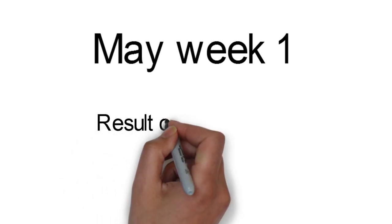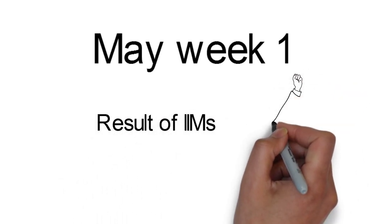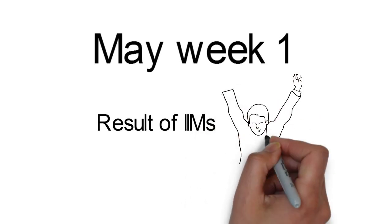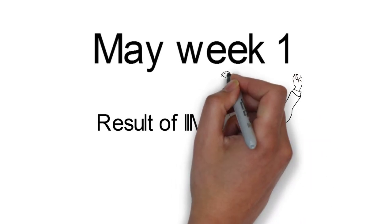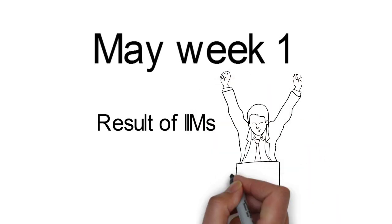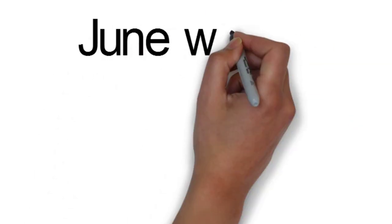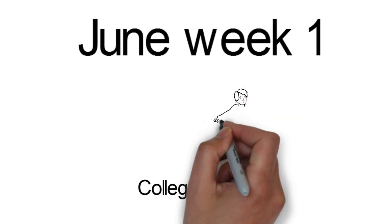Then in May, around 45 days from the interviews, the final results from the IIMs will come out, and you will get your admission into the college — whether IIM Ahmedabad, IIM Bangalore, or SPJIMR. June Week 1 is the final admissions and your college starts.